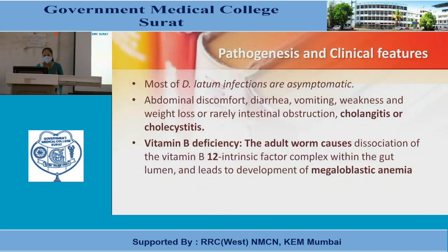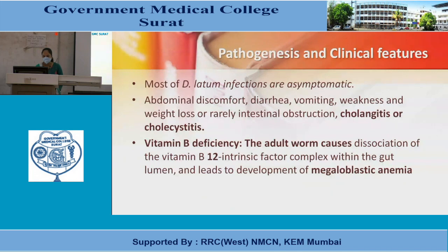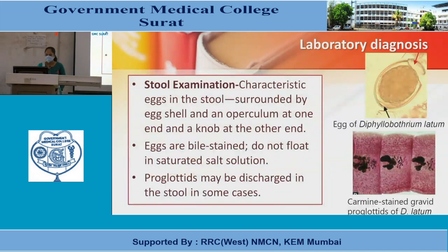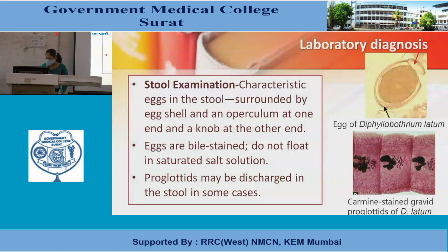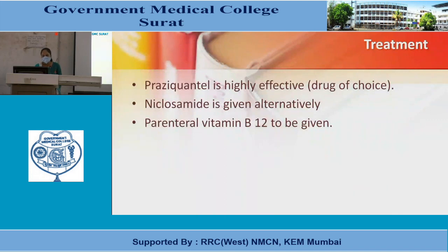Pathogenesis and clinical features: most D. latum infections are asymptomatic. Symptoms may include abdominal discomfort, diarrhea, vomiting, weakness, weight loss, or rarely intestinal obstruction, cholangitis, or cholecystitis. Vitamin B12 deficiency occurs due to dissociation of the vitamin B12–intrinsic factor complex within the gut lumen, leading to megaloblastic anemia. Lab diagnosis by stool examination: eggs are oval, surrounded by an axial shell, with an operculum at one end and a knob at the other; they do not float in saturated salt solution. Proglottids may be discharged in stool. Treatment: praziquantel is the drug of choice; niclosamide is an alternative. Parenteral vitamin B12 should also be given.